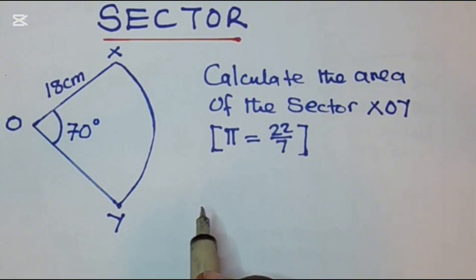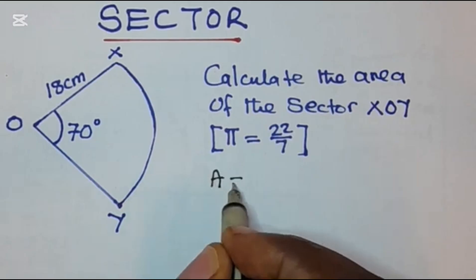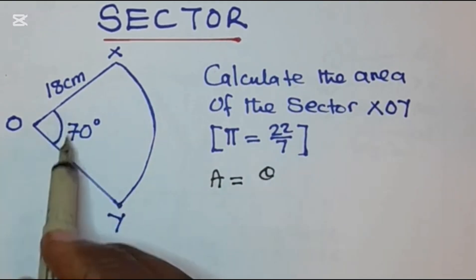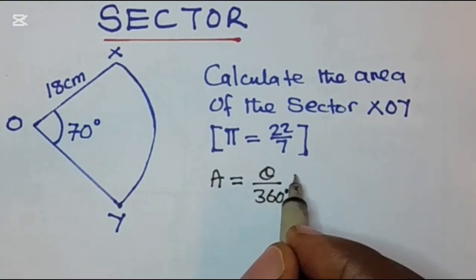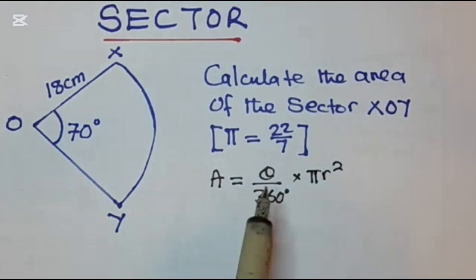To find the area of a sector we use the formula: area is equal to theta, theta is the central angle here, then over 360 degrees times pi r squared. So we use this formula theta over 360 times pi r squared.